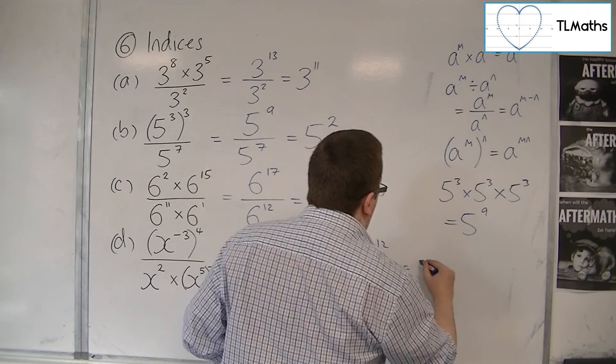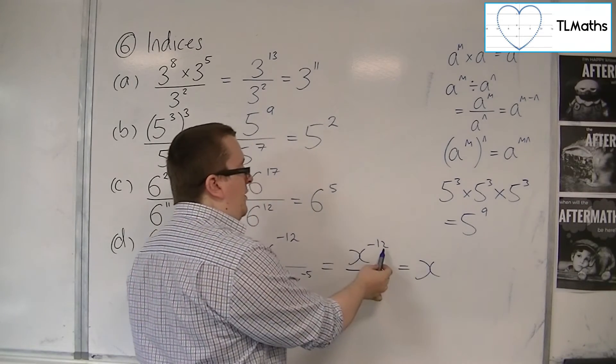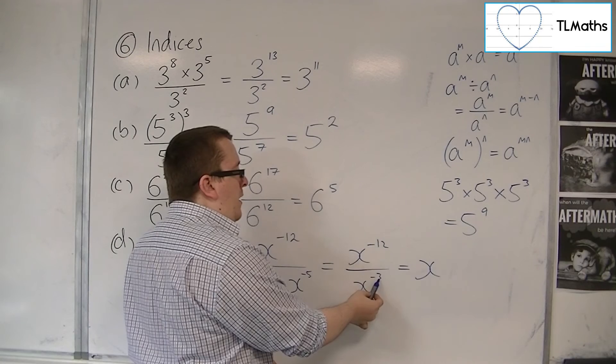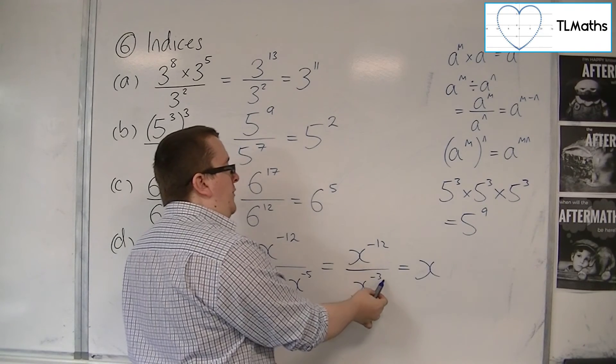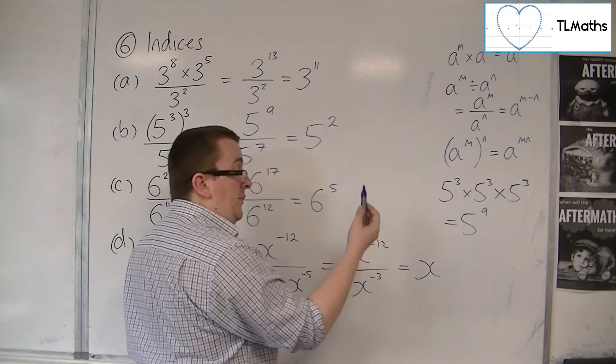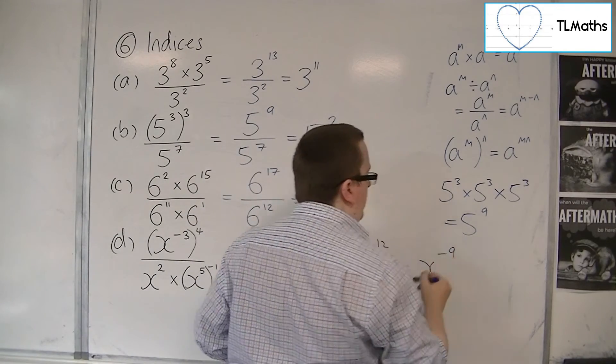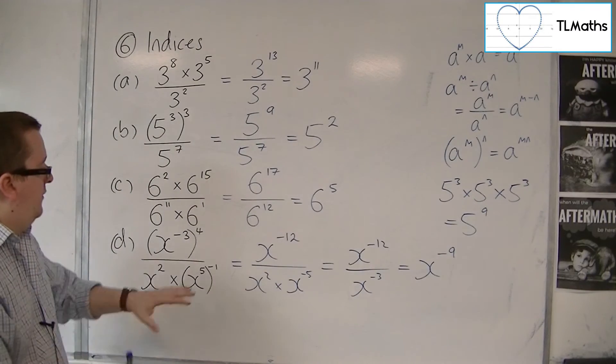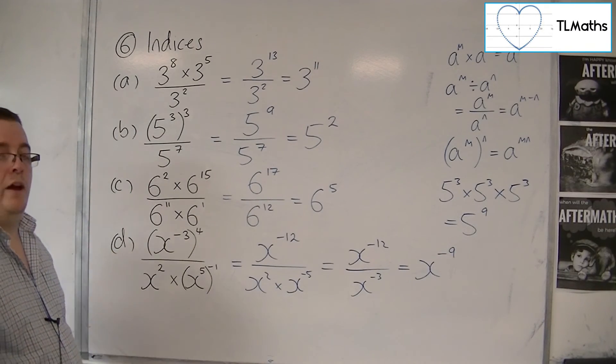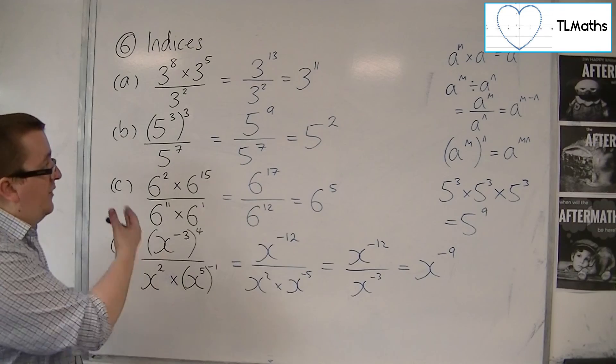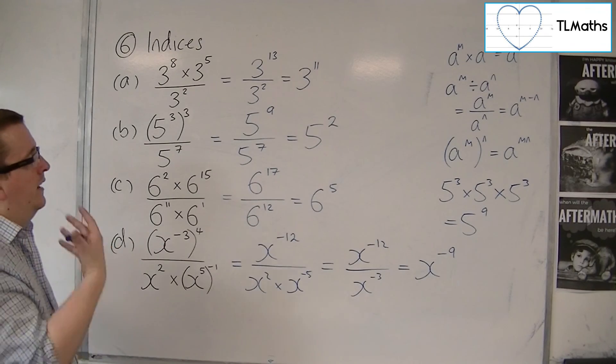So we have x^-12 ÷ x^-3, which is x^(-12-(-3)). Taking away -3 is the same as adding 3, so -12 + 3 = -9. This gives us x^-9. And that's how we deal with indices at this stage.